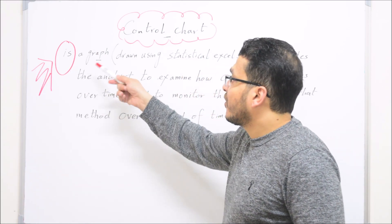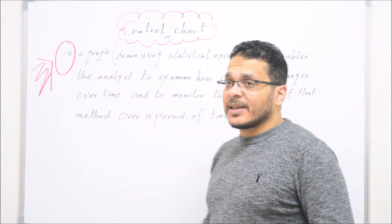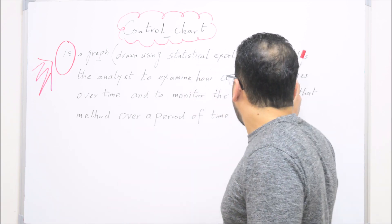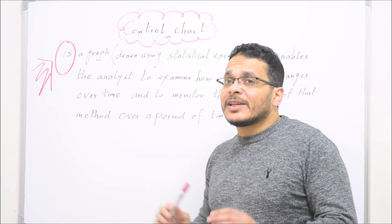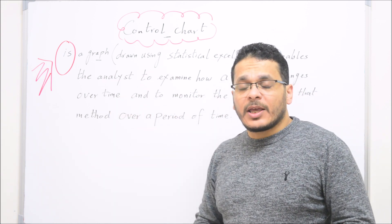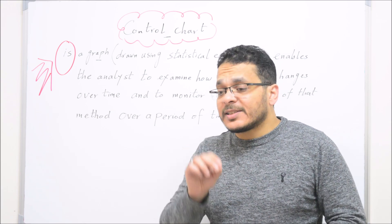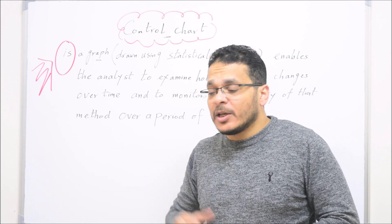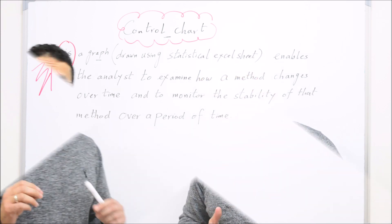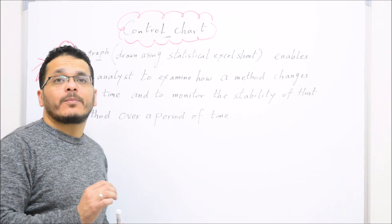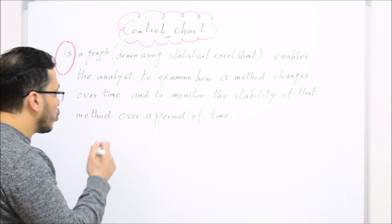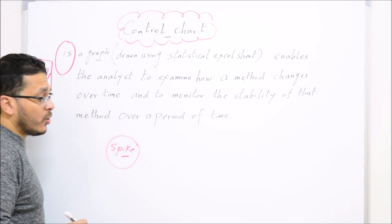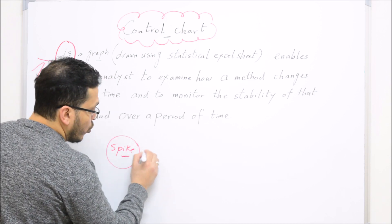A control chart is a graph drawn using a statistical Excel sheet. You will prepare an Excel sheet to draw this graph, which will enable the analyst to examine how a method changes over time and to monitor the stability of the method over a period of time — not only for one working day, but over an extended period. To assess the efficiency of a method for one working day, you run a spike sample.